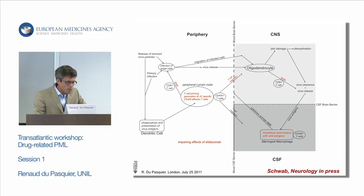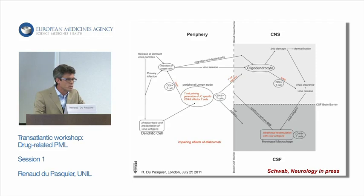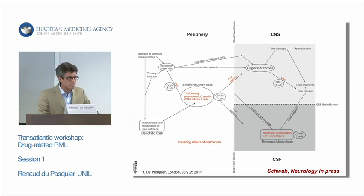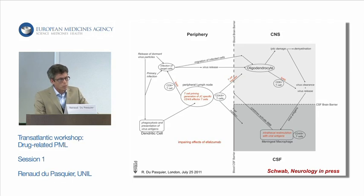Heinz Windl will come back in more detail to the mechanism of efalizumab, but a paper from his group in press tries to understand how efalizumab could favor the onset of PML. This probably has to do with T-cell priming in lymph nodes, preventing activated T-cells from crossing the blood-brain barrier, and also preventing activated CD8 T-cells from efficiently lysing JCV-infected oligodendrocytes.